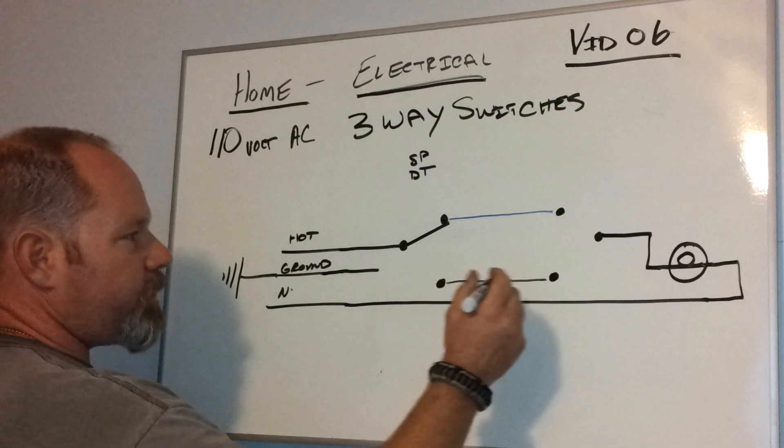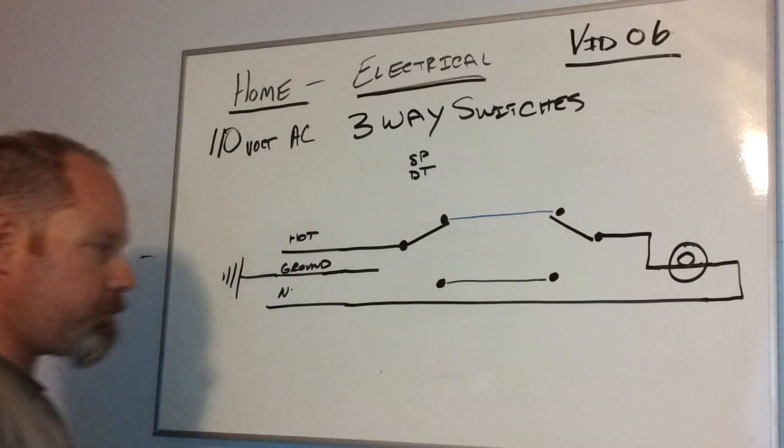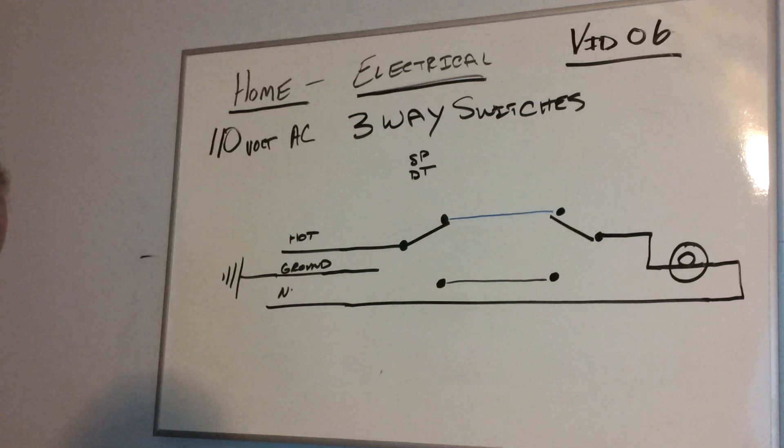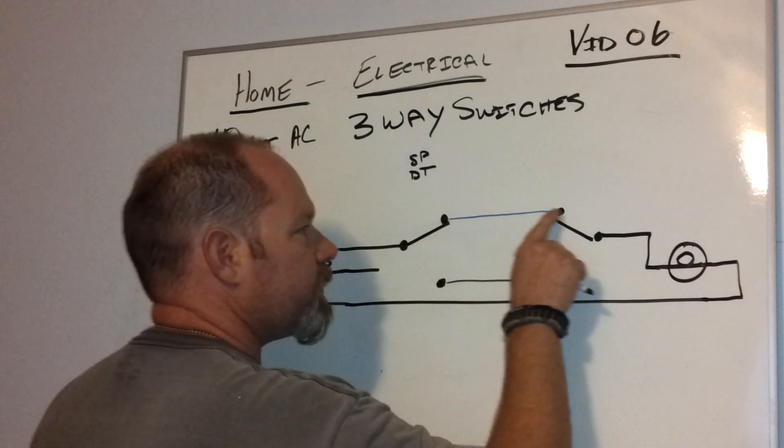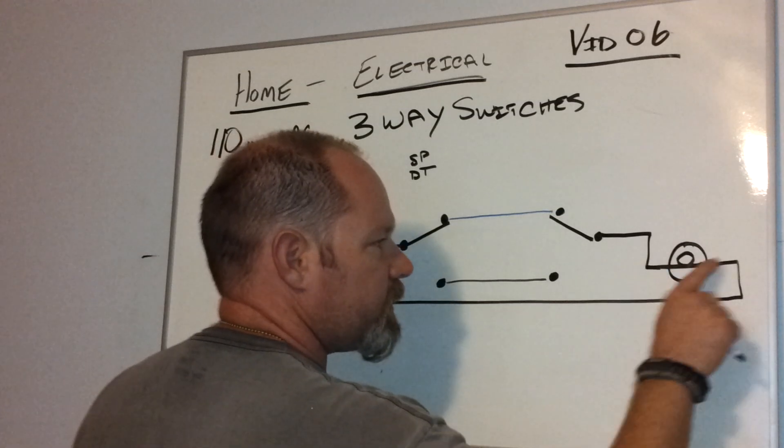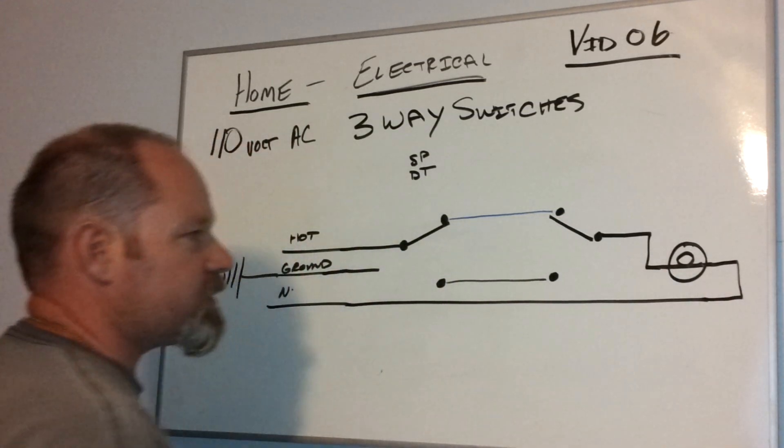Now the way this works is, watch what happens when both switches are in the same position. The hot comes in, it goes up, over, and down to the light, and then the neutral makes it back and completes your circuit. The light's on at that point.